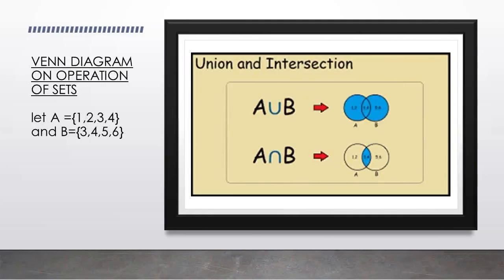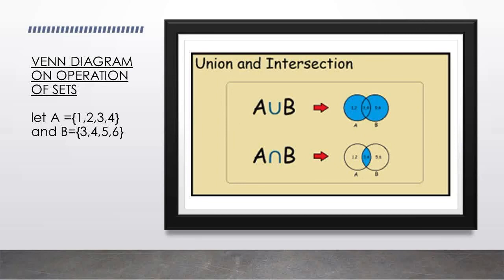Next topic is the Venn diagram on operations of two sets. जब हम किसी भी set के representation को with the help of a diagram show करते हैं, then that diagram is called the Venn diagram. Let A = {1, 2, 3, 4} and B = {3, 4, 5, 6}. For A union B, वो elements आ रहे हैं जो A में हैं या B में हैं — the whole shaded region in blue represents A union B. For A intersection B, जो common है: 3 and 4 are common between A and B, so the overlapping blue portion represents A intersection B.